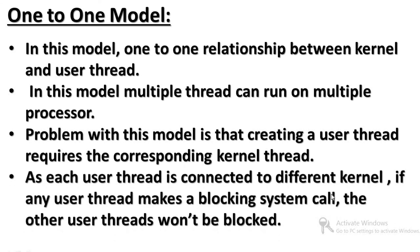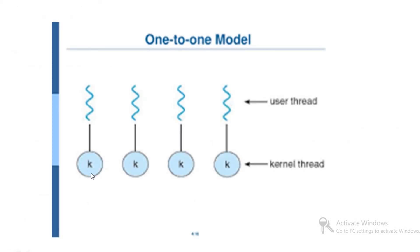Since each user thread is connected to a different kernel thread, if any user thread makes a blocking system call, other user threads will not be blocked. Each user thread is connected to its own kernel-level thread, so blocking one thread does not block other user threads. In one-to-one, one user thread maps to one kernel-level thread.